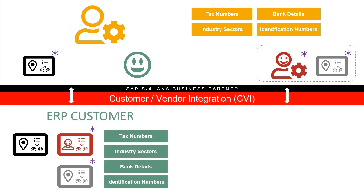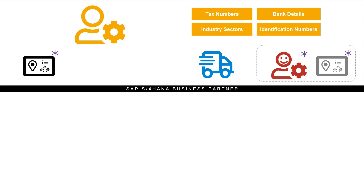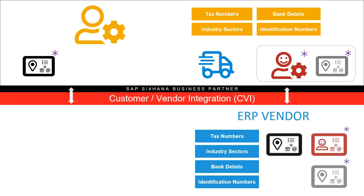That customer master has to be created in full — meaning with its own Business Address Services record, its own contact persons, and separate Business Address Services records for each contact person that has a business address. A user sees and maintains the data for the business partner, and the system, through customer-vendor integration, creates and maintains data for the plain old customer master in the background and all of its dependent objects. Similarly, because MM continues to use plain old vendor masters, when a business partner is extended to a supplier role, a plain old vendor master is created in the background.